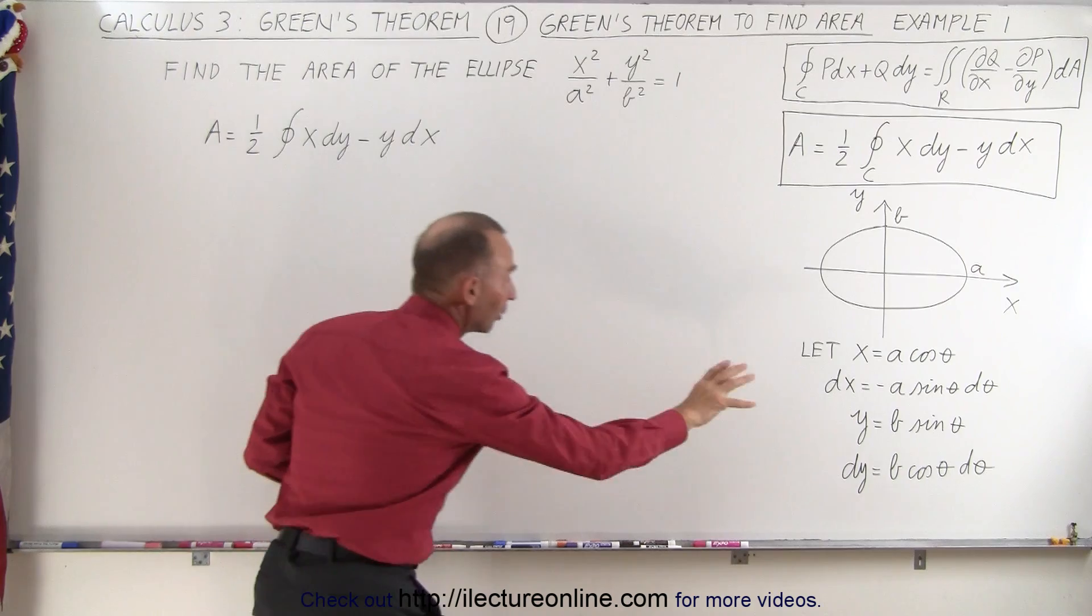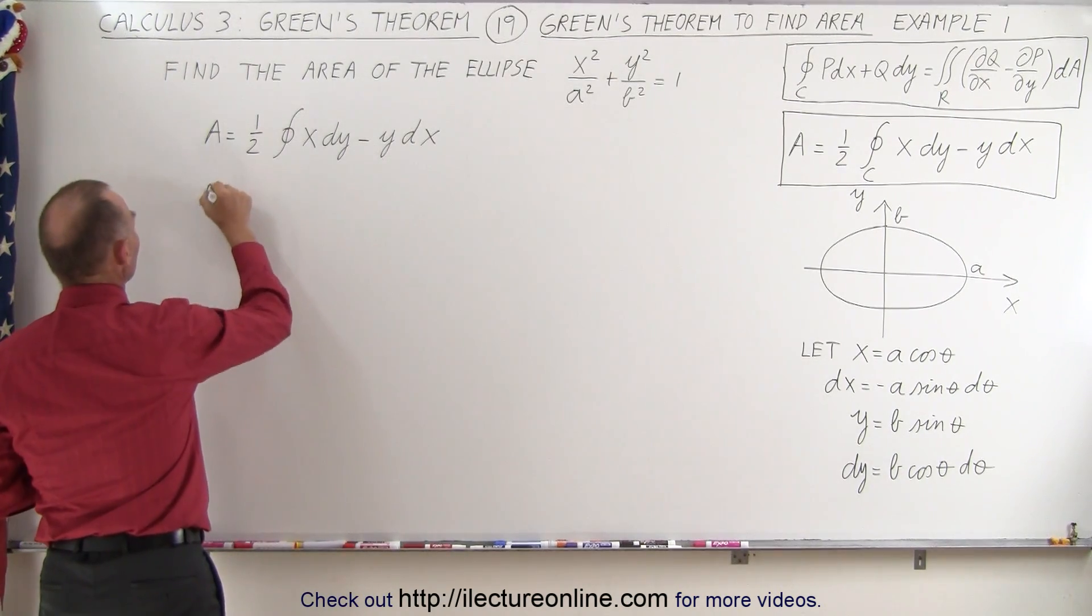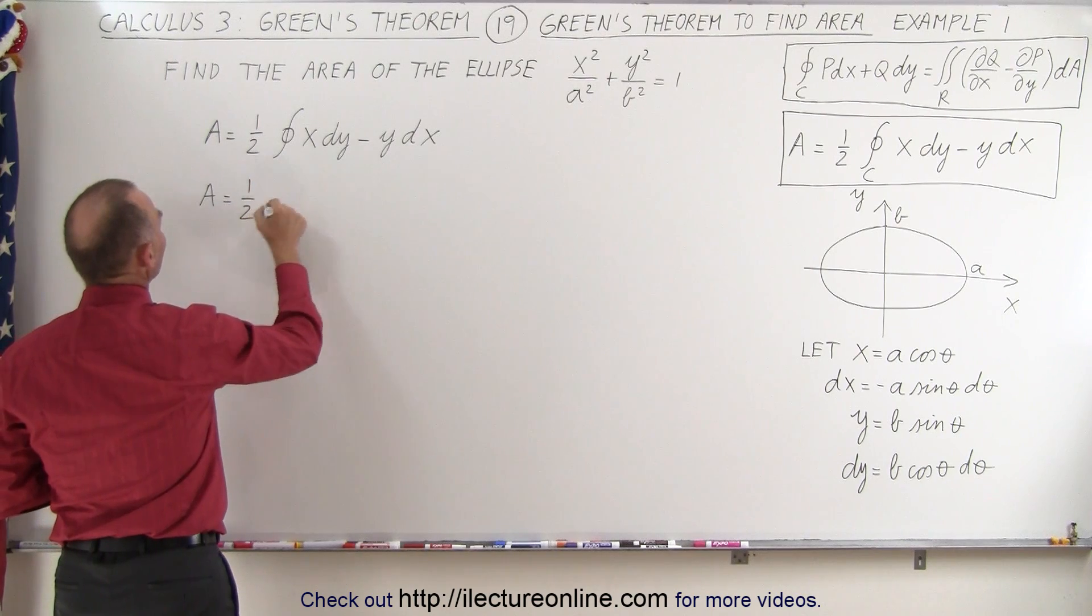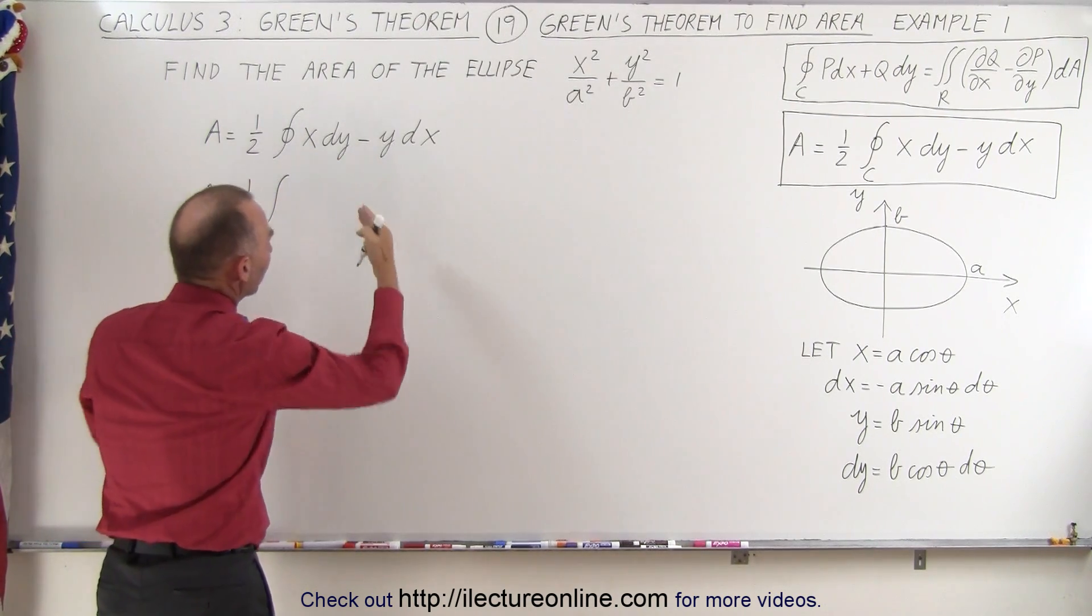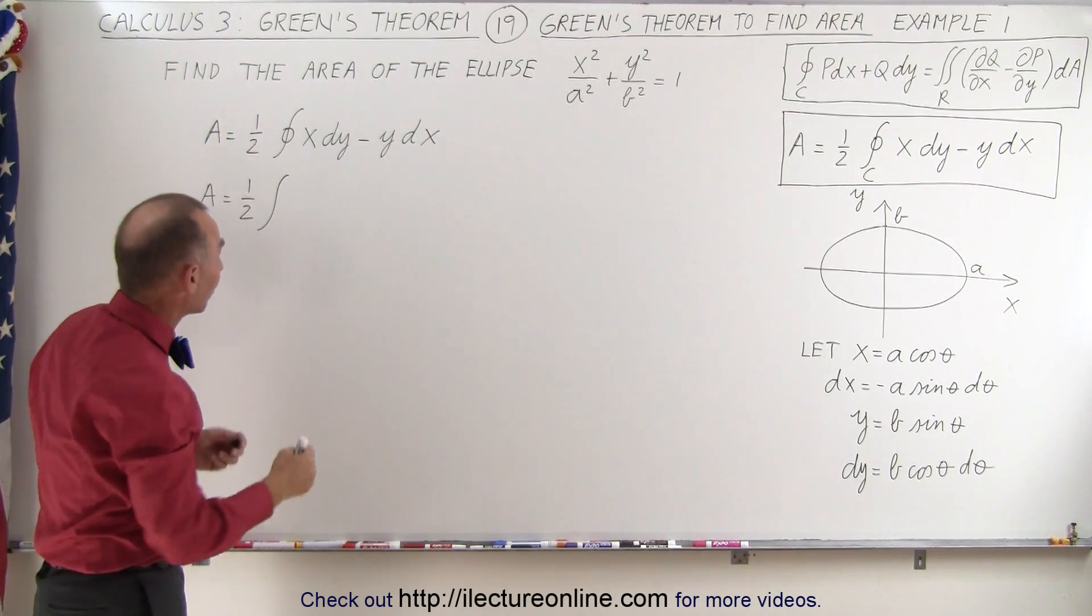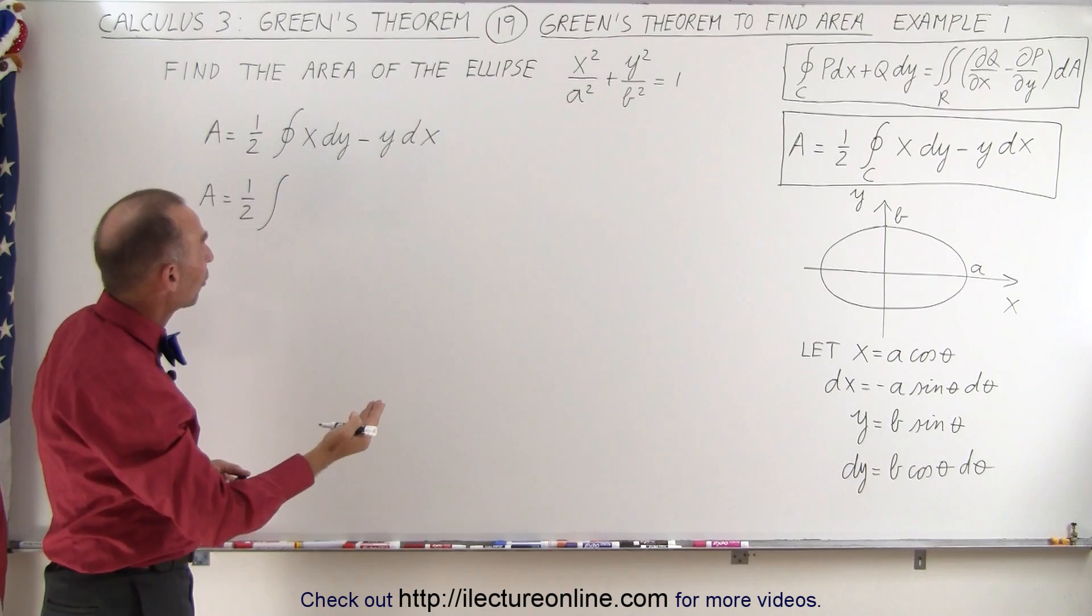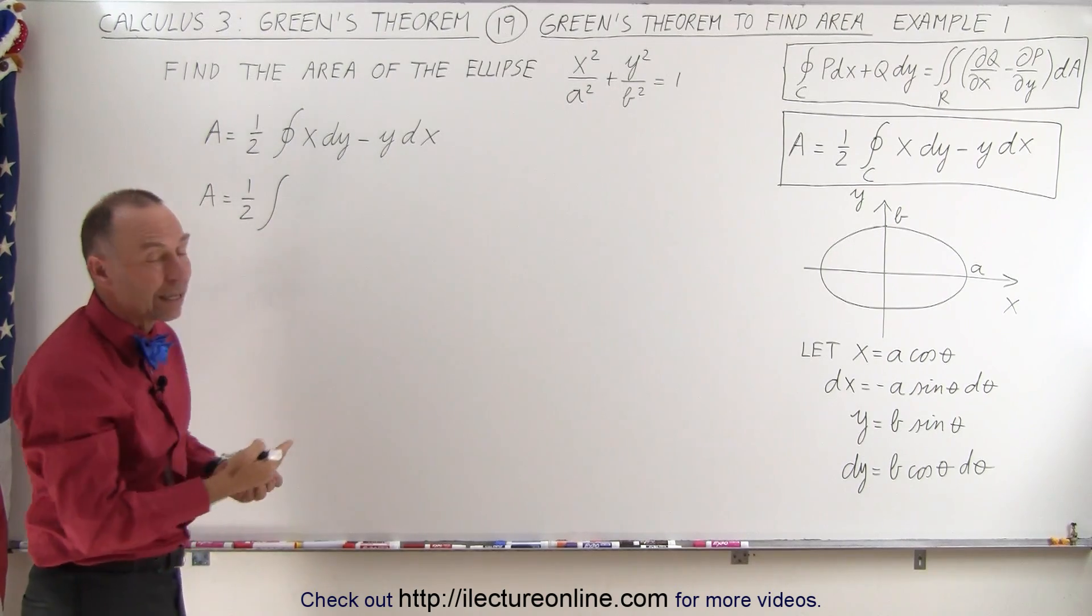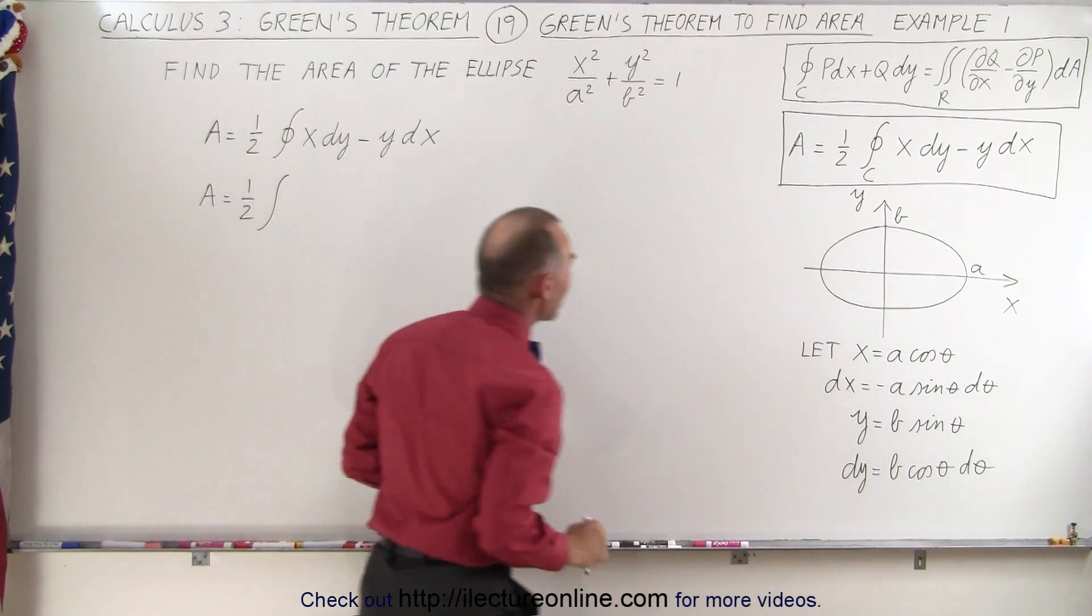So what we're going to do is we're going to plug those into our equation right here. That means that the area of the ellipse is equal to one-half times the integral. Now instead of integrating over x and y, we can't do that on one single integral. We have to come up with a parametric equation. In this case, we're going to convert x and y to the angle theta and to the constants a and b.